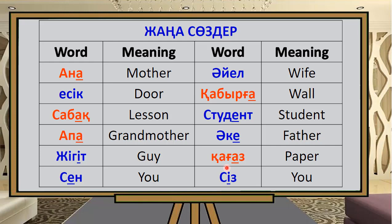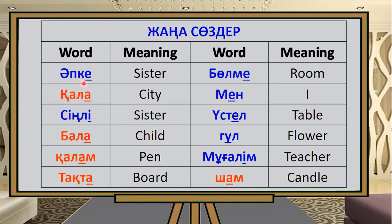Qawaz means 'pepper.' Says means 'you.' Aapke means 'sister.' Qala means 'city.' Singli means 'sister.' There is also a word for 'bigger sister' in Kazakh.